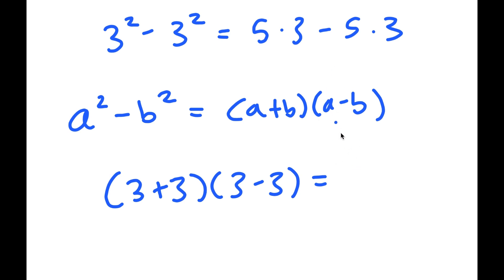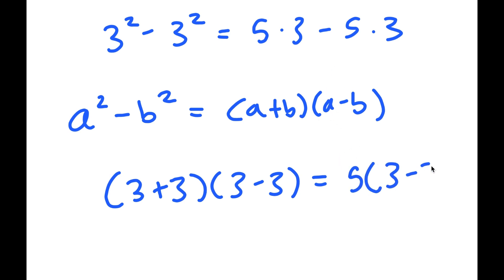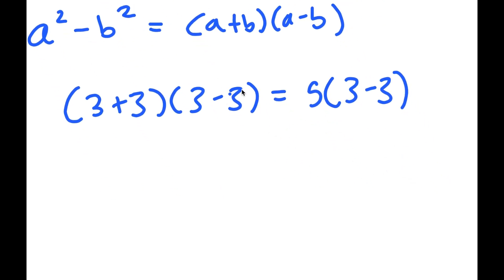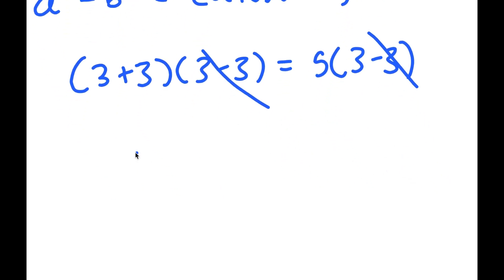And I have this, and on my right-hand side, I'm going to factor out 5. So I have 5 times 3 minus 3. Now, if I cancel 3 minus 3 on both sides, I get 3 plus 3 is equal to 5.